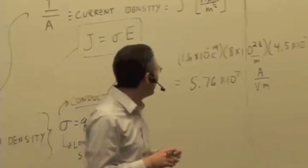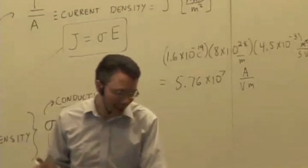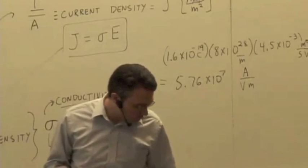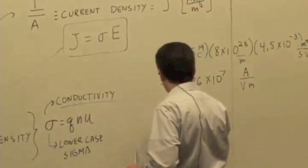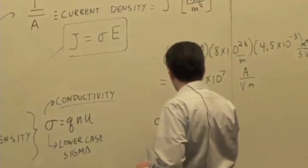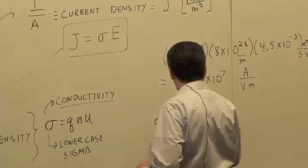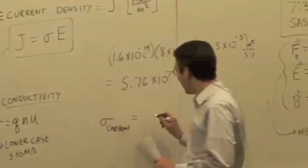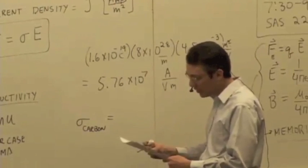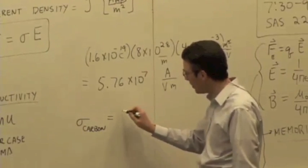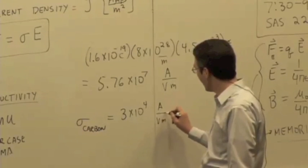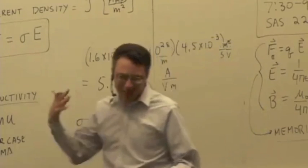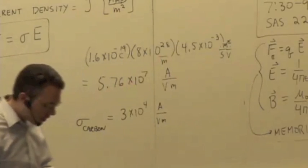That's conductivity of copper. 10 to the 7th in these units is typical conductivity for a high conductivity metal: copper, gold, silver, that sort of thing. Carbon, on the other hand, conductivity of carbon, which is not a good conductor, often considered just an insulator, is about something like 10 to the 4th, 3 times 10 to the 4th. Just to give you an example of how big these quantities can be.